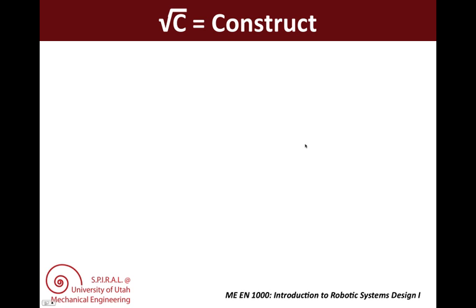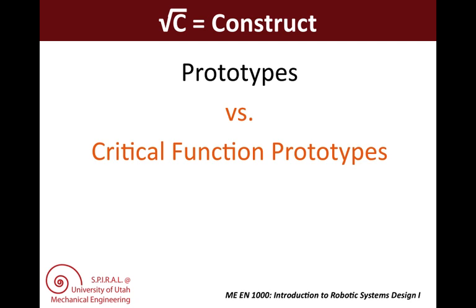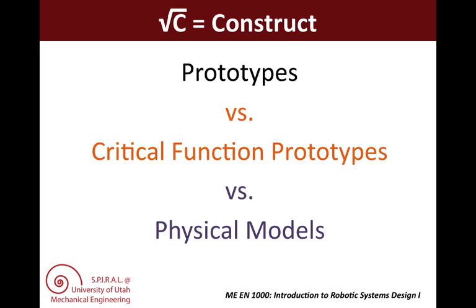Now let's discuss construct. There are three different terms we'd like you to know. The first is prototypes — these are first attempts at full-scale functioning, physically realized versions of a complete design. You would do this as a team when you've made all your design decisions and you're ready to test something out before going into full-scale manufacturing. This is distinct from critical function prototypes, also called proof-of-concept prototypes. These are prototypes of critical subsystems of a design whose behavior is unknown and which must be evaluated through tests and proven before they can be incorporated in the design — this is what you'll be working on for your upcoming lab demos. These are distinct from physical models, which are smaller-sized versions of a design, perhaps to scale, or parts thereof. Physical models may or may not be functional; you might build one to check the interference of two different parts, for instance.